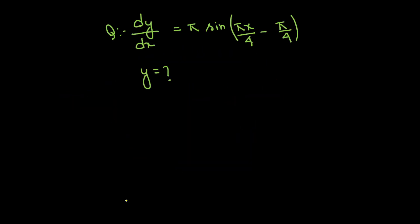dy by dx is equal to pi sin of pi x minus 4, minus pi x by 4, minus pi by 4. y is equal to what?